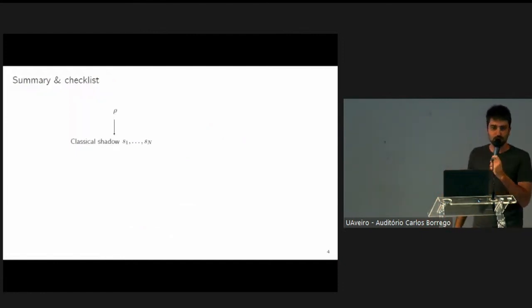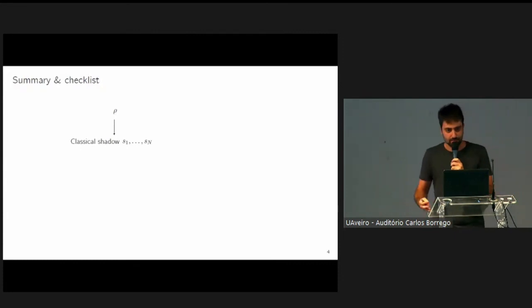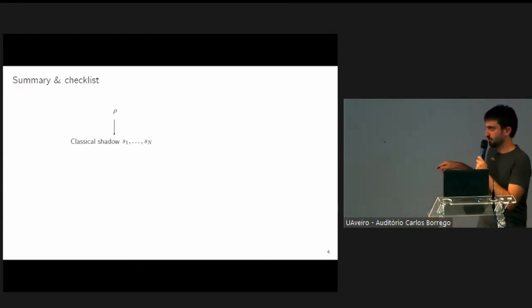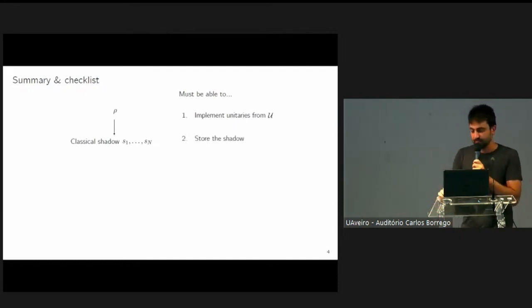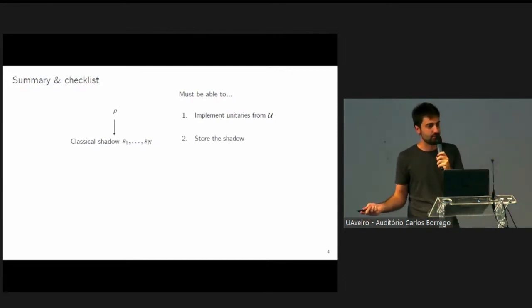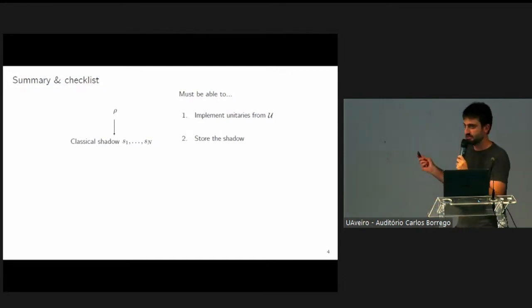But if we suppose that we actually want to do this in practice and apply this protocol, there is a number of things that we need to be able to do. First of all, from raw data, we want to extract this classical shadow. The basic requirement to do this is that we must be able to implement unitaries from this curly U ensemble. Once we do that, we get our shadow, which we must be able to store on a classical computer. Until now I said the classical snapshots live on the classical computer, but these are quantum states. So in order to store them efficiently, they need to have some special properties, for example, they can be stabilizer states.